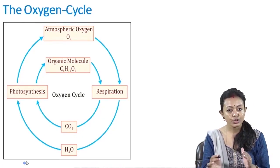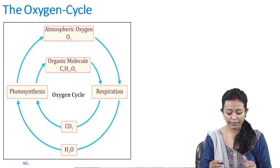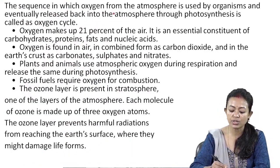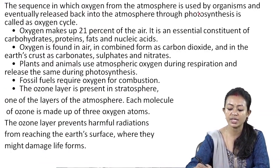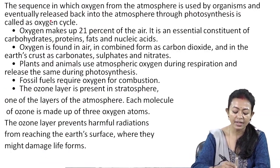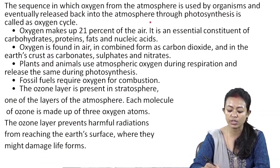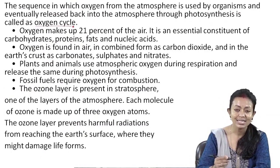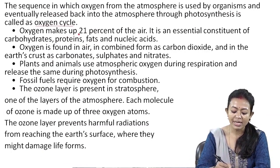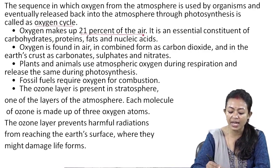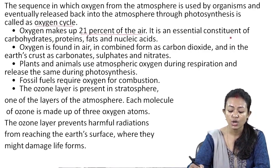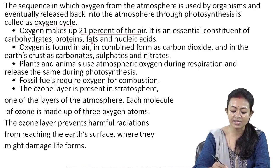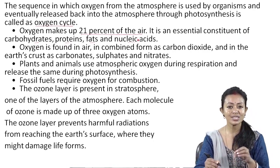Now let us study how the oxygen cycle is maintained in the atmosphere. The sequence in which oxygen from the atmosphere is used by organisms and eventually released back into the atmosphere through photosynthesis is called the oxygen cycle. Oxygen makes up 21% of the air.